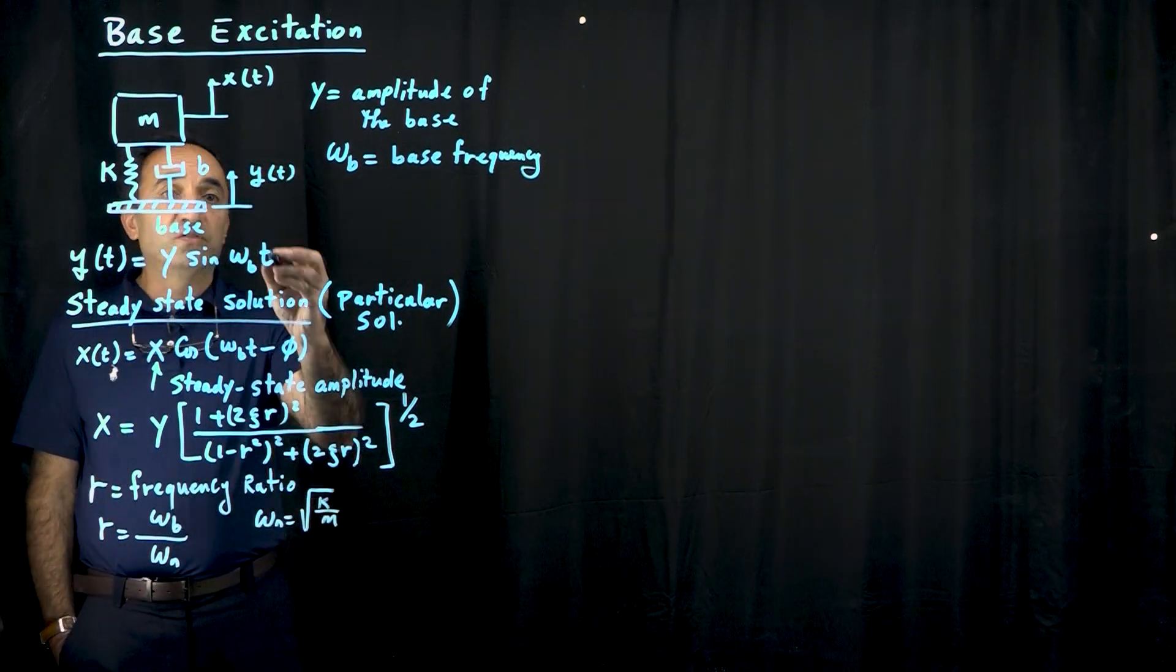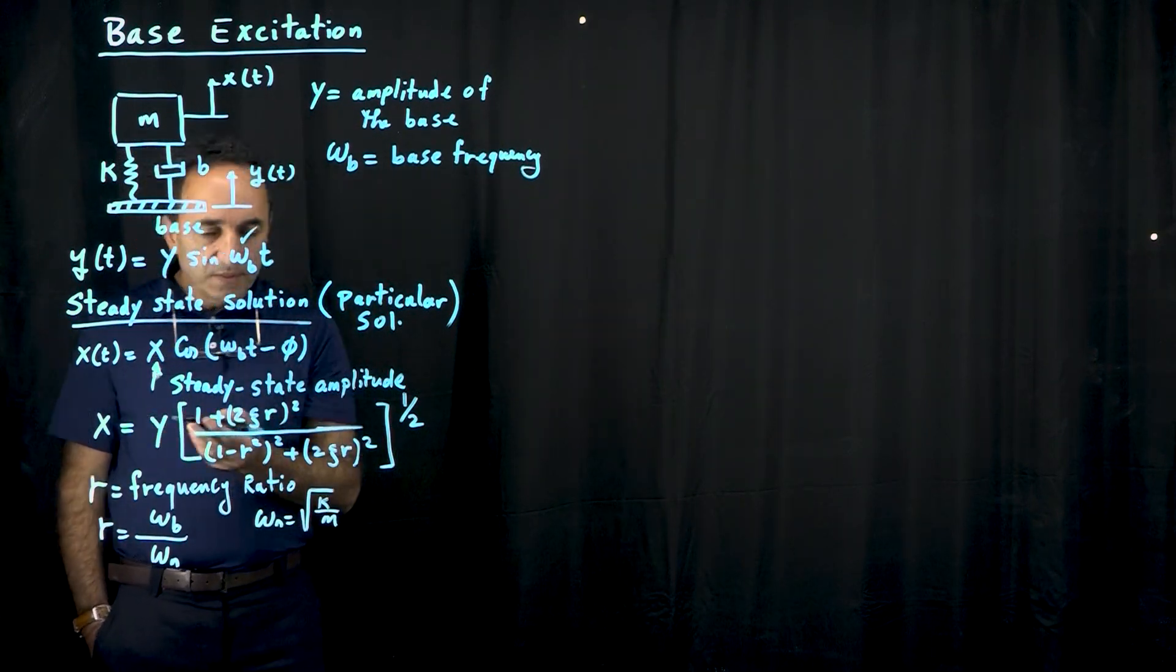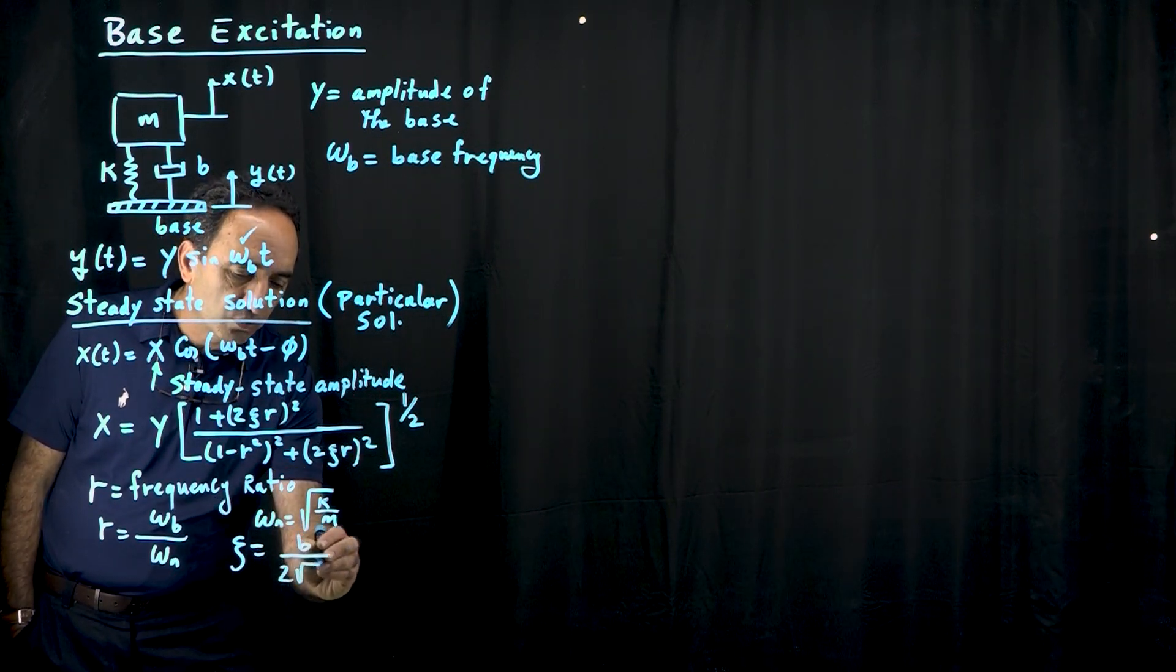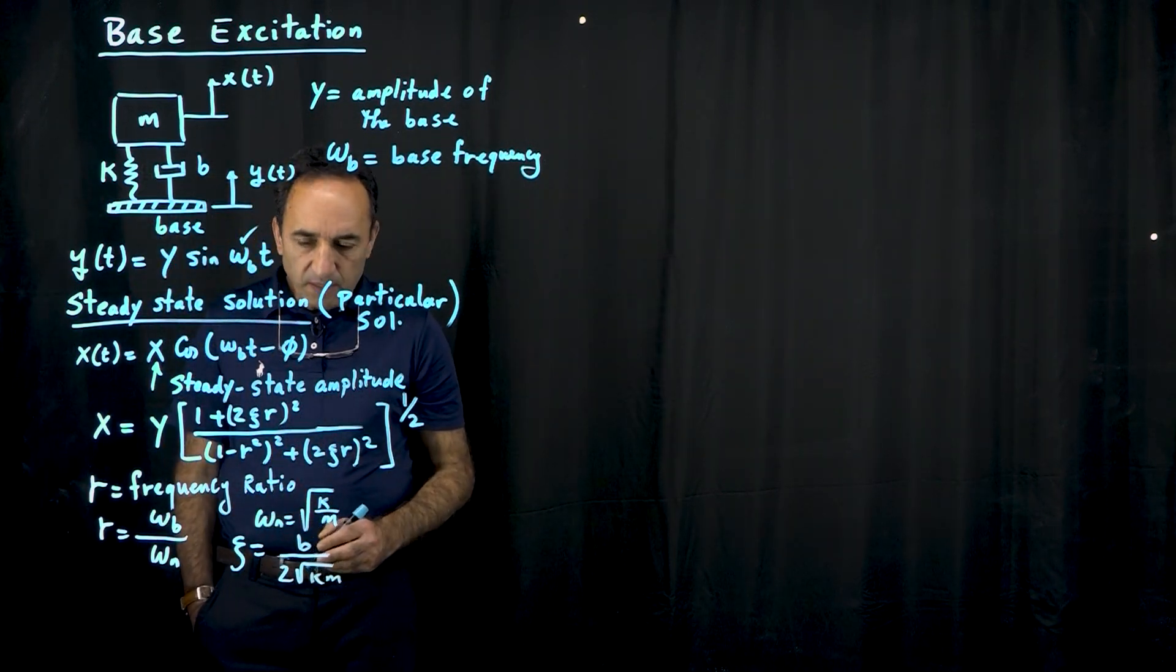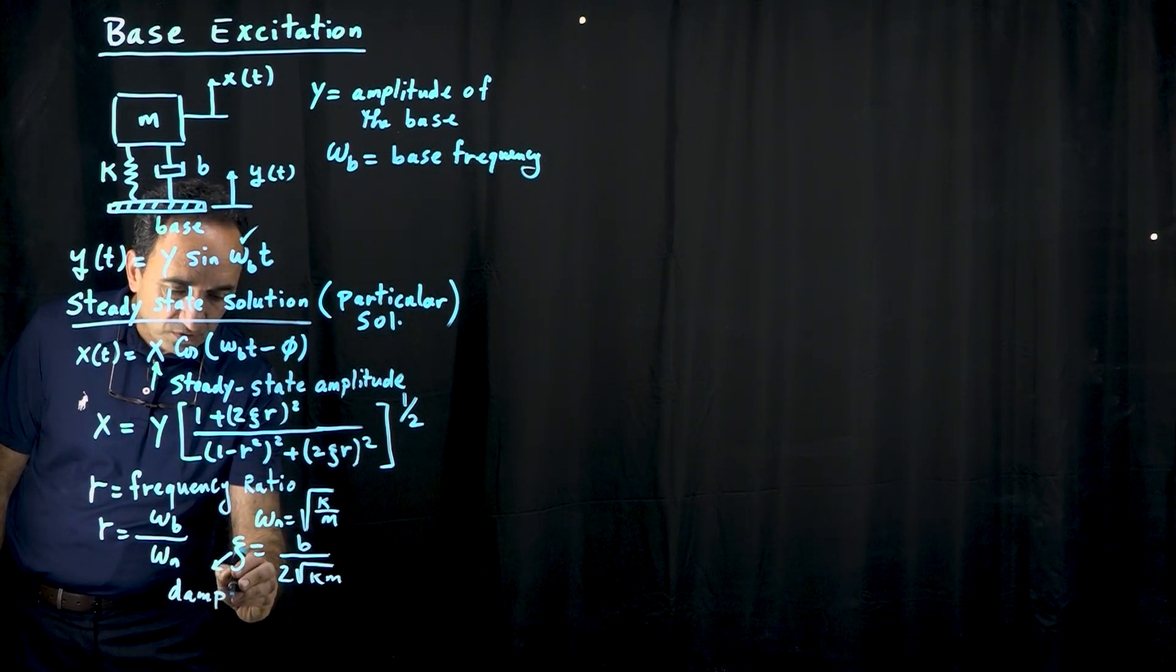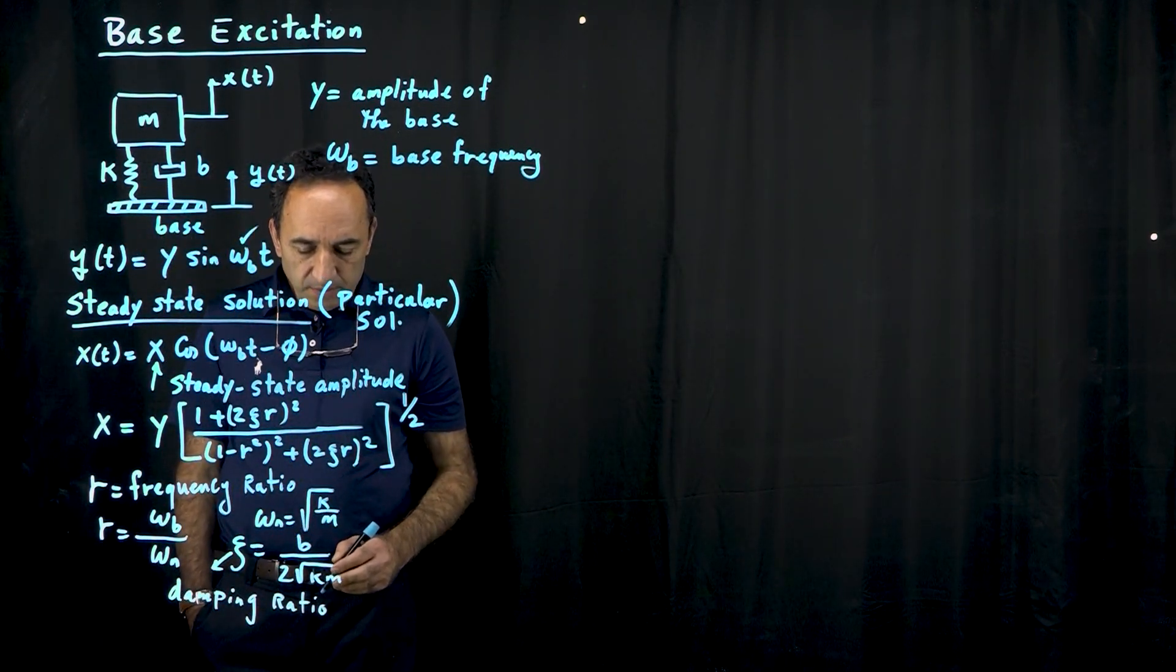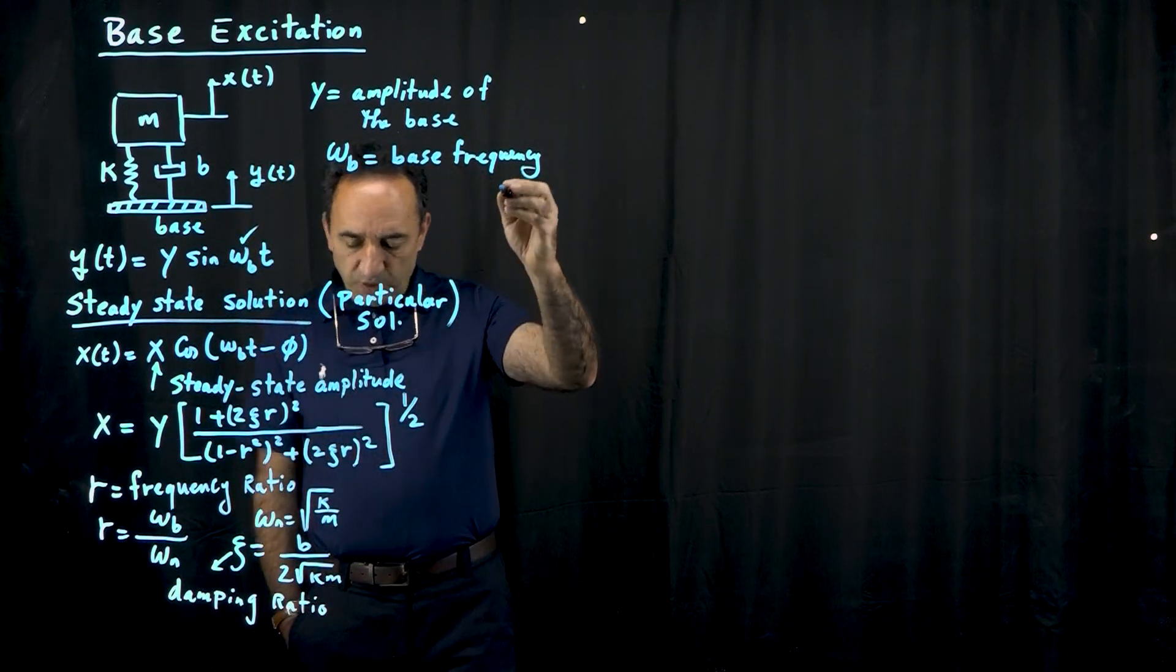and here zeta is equal to b, the damping coefficient, divided by 2 square root of km, and zeta, of course, is called damping ratio. Just if you don't remember the name for that, that's the damping ratio, and basically if you take this equation and put it in this format,